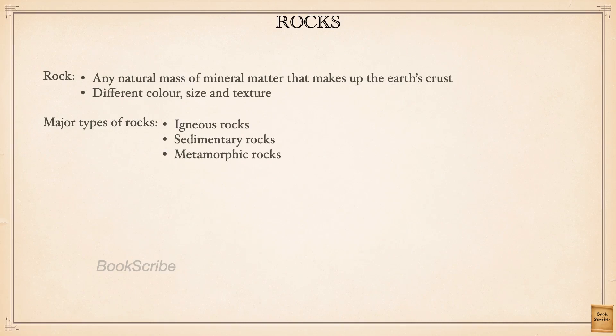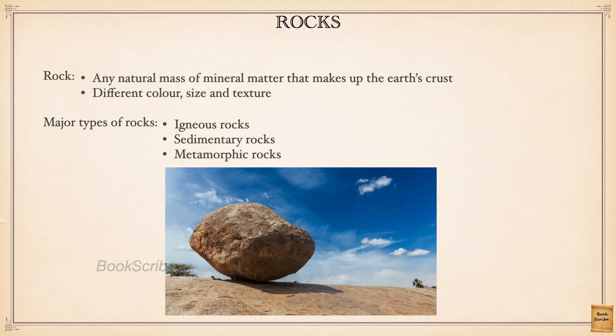Our Earth's crust is made up of different rocks. Any natural mass that contains minerals which makes up our Earth's crust is called a rock. Rocks will be of different colors, sizes, and textures — they can be soft or rough. These rocks are of three major types: the first is igneous rocks, next is sedimentary rocks, and the third is metamorphic rocks.